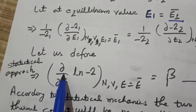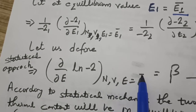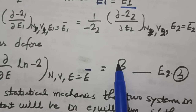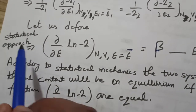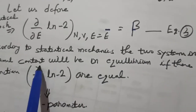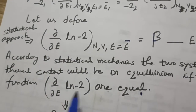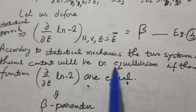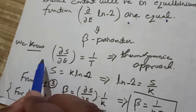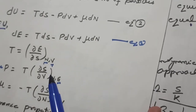We define the beta parameter as: beta equals del/del E of ln(omega), evaluated at N, V, with E equal to E-average. This beta parameter is obtained with the help of the statistical approach and arises because of the statistical method. According to statistical mechanics, the two systems in thermal contact will be in equilibrium if this function del/del E of ln(omega) is equal for both systems.